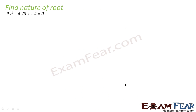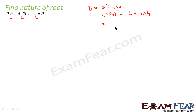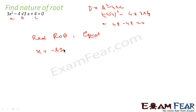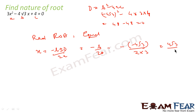Let us see another example: 3x² - 4√3·x + 4. Here D = b² - 4ac. A = 3, B = -4√3, C = 4. So D = (-4√3)² - 4·3·4 = 48 - 48 = 0. Since D = 0, it will have real and equal roots — only one value. From the formula, x = -b/2a = -(-4√3) / (2·3) = 4√3/6 = 2√3/3. That is the answer.